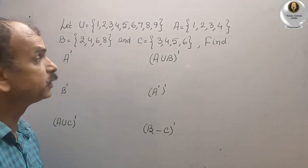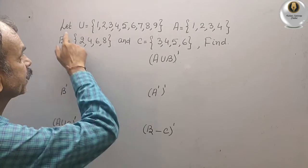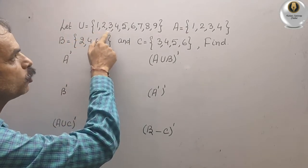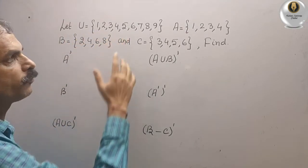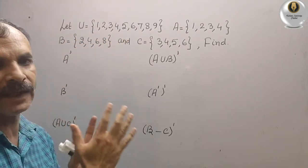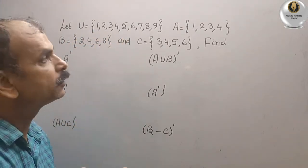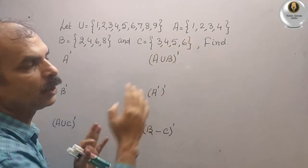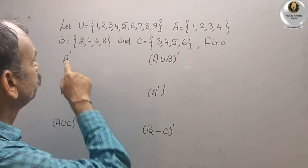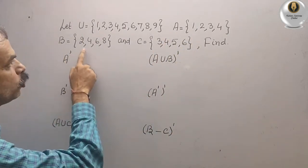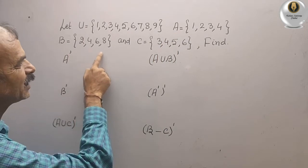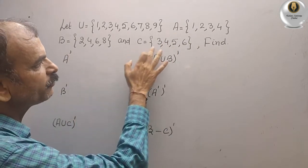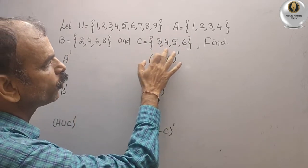The question gives us: U = {1, 2, 3, 4, 5, 6, 7, 8, 9}, A = {1, 2, 3, 4}, B = {2, 4, 6, 8}, and C = {3, 4, 5, 6}.